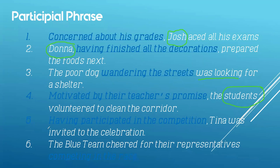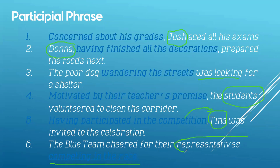Number 5: 'Having participated in the competition' — found at the beginning of the sentence, referring or describing the subject Tina. Which Tina? The Tina who having participated in the competition. Referring to the subject Tina — therefore, this is an adjective. Number 6: 'The blue team cheered for the representatives. Competing in the race.' So 'competing in the race' is your participial phrase, modifying the object of the preposition, 'representatives.' Which representatives? Competing in the race. Participial phrase — always an adjective. The words modified are nouns or pronouns.